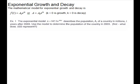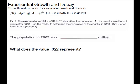Use the model to determine the population of the country in 2003. What does the .022 represent? Our first question: what was the population in 2003? Our formula describes the population t years after 2003, so if we want to know in 2003, then our t is 0.